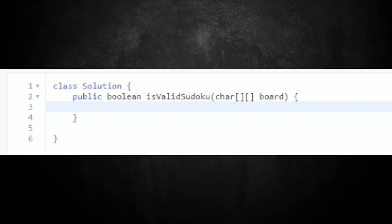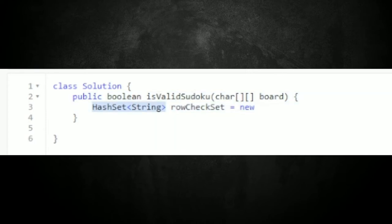Let me create a hash set — HashSet<String> — and I'm going to call this rowCheckSet. We've got that piece done.